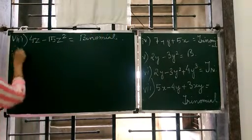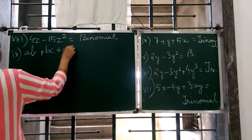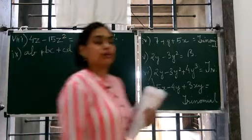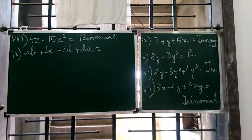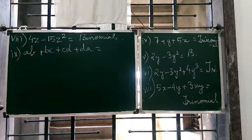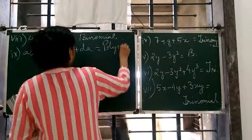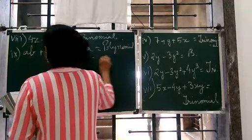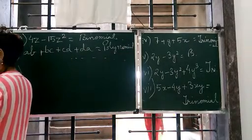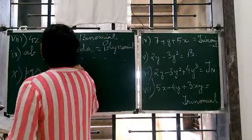After that ab plus bc plus cb plus dk, normally 1, 2, 3, 4, again not a binomial, not a trinomial then what is it? It's a polynomial which do not fit in these 3 categories. Then PQR, just one term so it's a monomial.